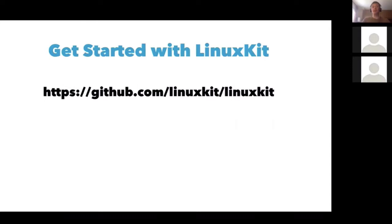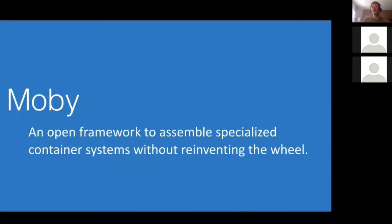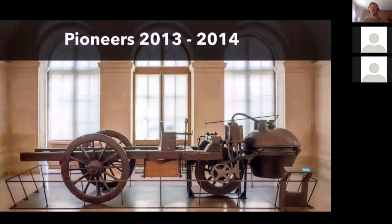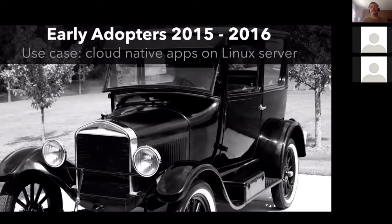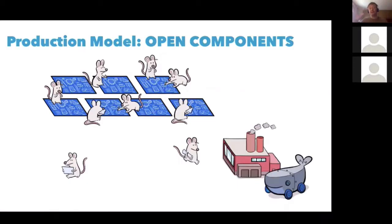You can get the code at the LinuxKit GitHub repo. As the Docker ecosystem has evolved — from pioneers in 2013-14 with a monolithic codebase, to 2015-16 when Docker adoption grew a lot especially for cloud-native applications on Linux servers — we started componentizing. That's the diagram with all the kits. Our teams were collaborating with the rest of the community on different kits and assembling them into a product.